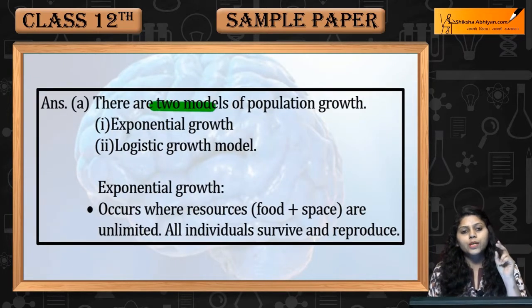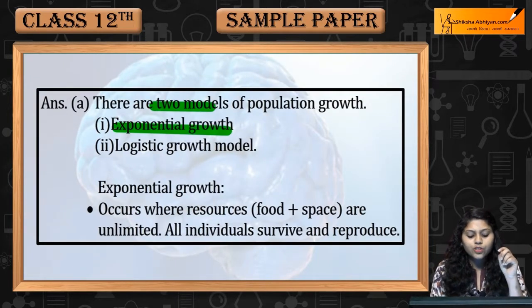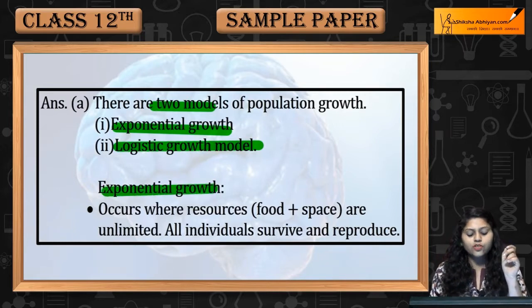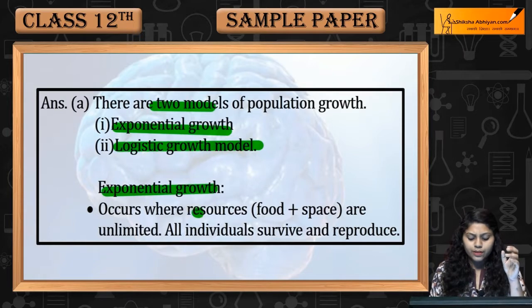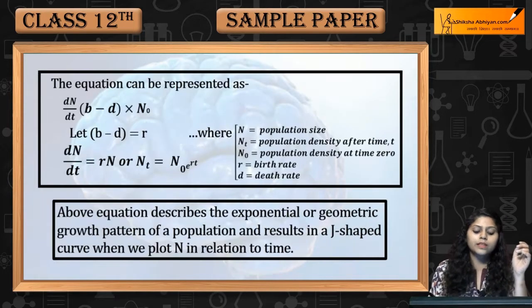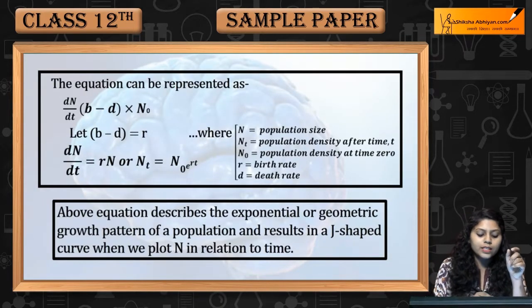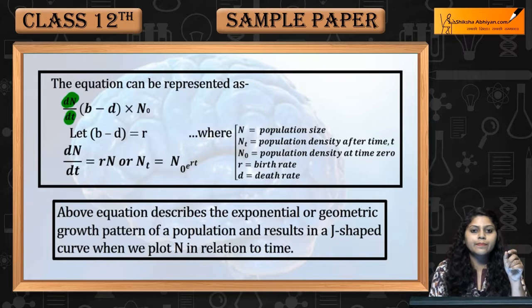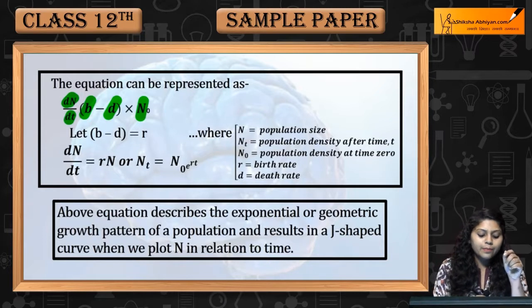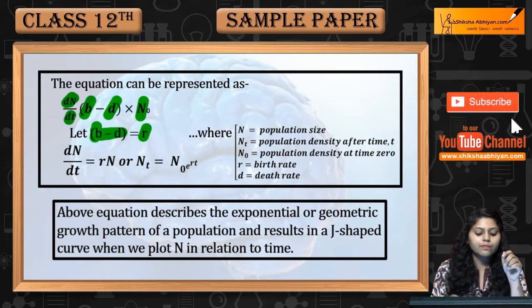Do tarah ki models hote hain population growth ke: exponential and logistic growth model. Exponential mein kya hota hai — unlimited resources hote hain, food aur space unlimited hai, sabhi individuals survive karte hain aur reproduce bhi karte hain. Is ki liye equation hai: dN/dt = (b minus d) × N. Let b minus d be r.